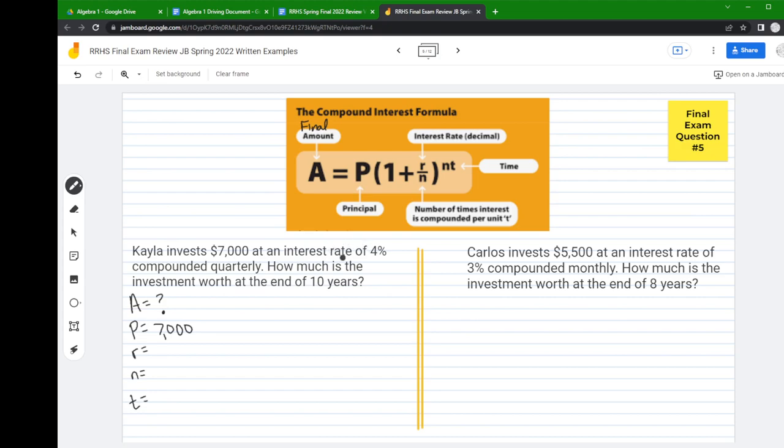At an interest rate of four percent, so that's your R. Remember, write it as a decimal. Compounded quarterly - that's the letter N. If it's compounding quarterly, there's four quarters in a year. The investment worth at the end of ten years makes my T equal to 10.